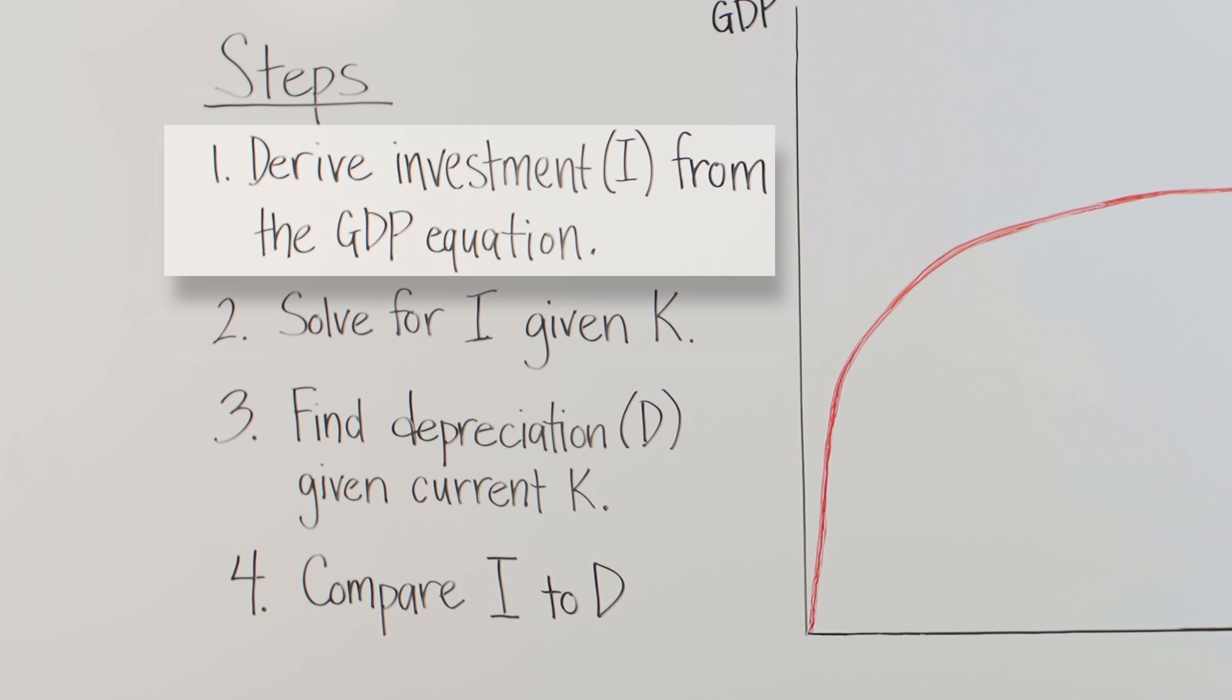To solve the second question, we'll need our answer from question one, the amount of capital we're accumulating through investment. We'll then find out how much capital we're losing to depreciation. And finally, we'll compare the two, investment to depreciation, to determine whether the country's capital stock, and therefore its GDP, is increasing, decreasing, or remaining constant in the steady state.